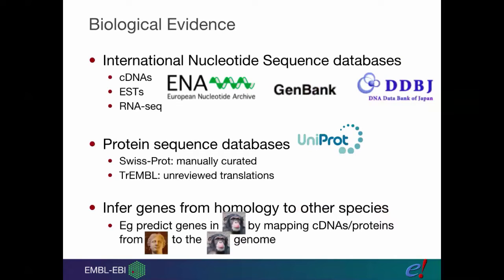We also use sequences from proteins. We use UniProt, both divisions: the SwissProt manually curated proteins and the TrEMBL unreviewed translations. If we're working with species that have less data in these public databases, we will use homology to other species. For example, the chimp genome was annotated by mapping cDNAs and proteins from the human onto the chimp genome.